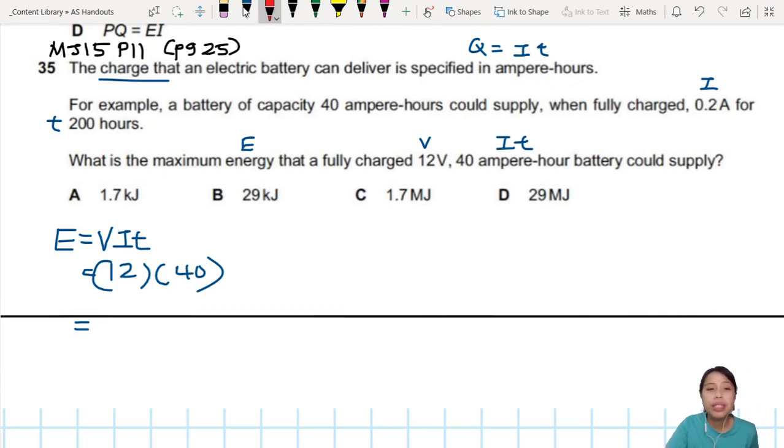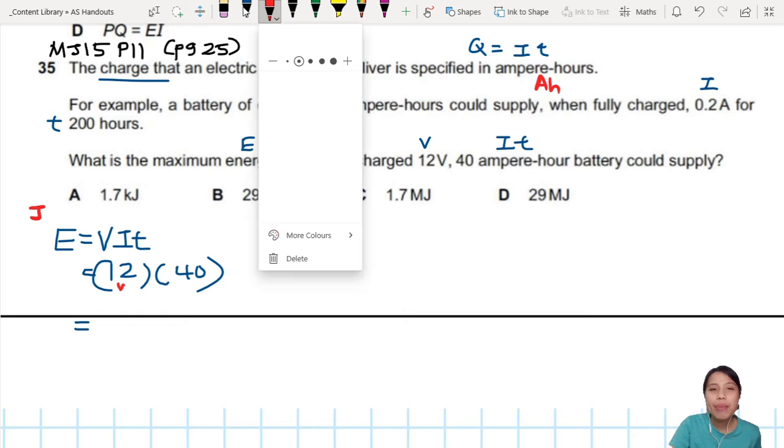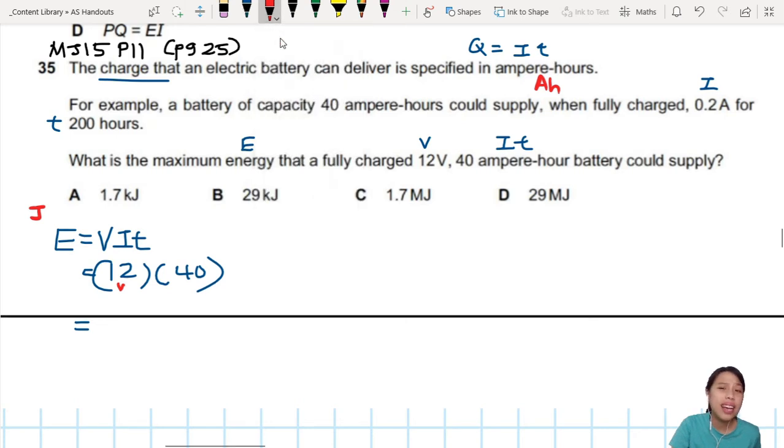You realize that something's not quite right, but it looks correct. What is missing? You need to check the units. This energy is in joules, so all this has got to be in SI units. This 12 is in volts, this 40 - what's the unit? Ampere-hour. Hour is not SI, we want it in seconds.